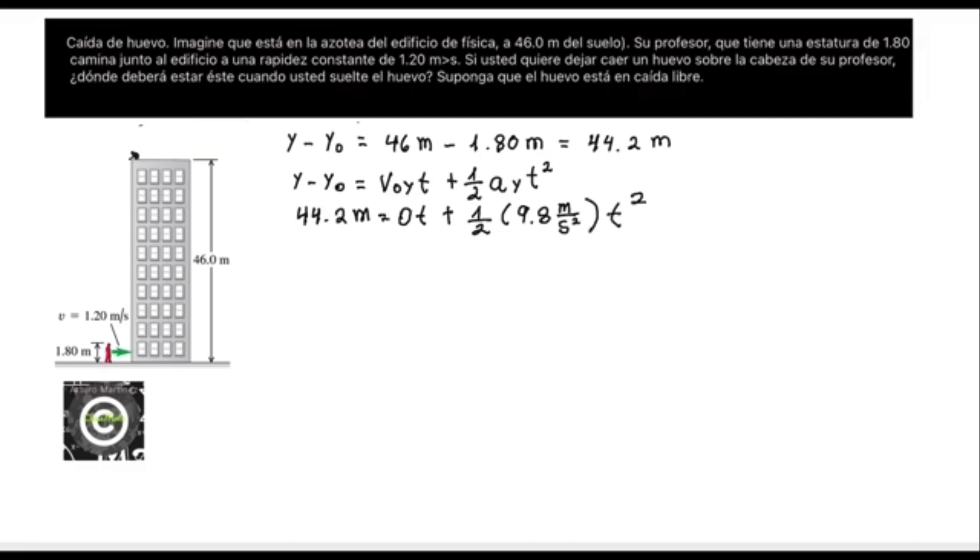To solve it, we realize that zero times the time is still zero. That no longer affects us. Now the two is going to multiply because it is dividing. It would multiply to 44.2 meters.